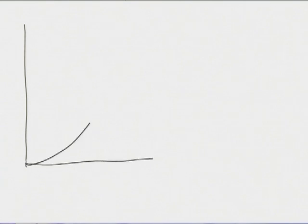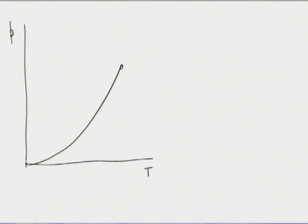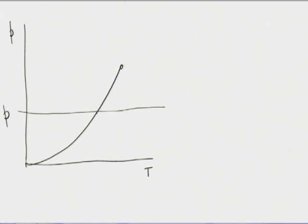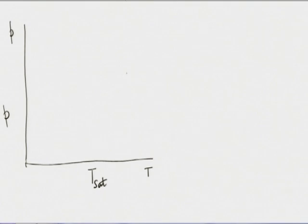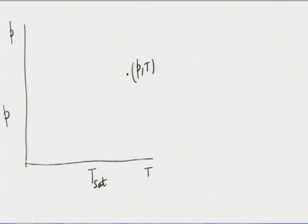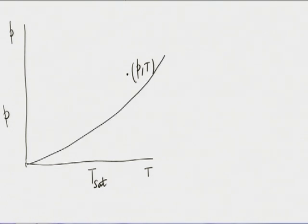Again, sketch the diagram because a question will be asked: given pressure and temperature, how do you determine whether it is liquid or vapour? Draw a line and say: given a pressure P naught and temperature T naught in state space, you must determine whether it is subcooled liquid, saturated liquid-vapour mixture, or superheated vapour, by checking which side of the saturation line the point lies on.